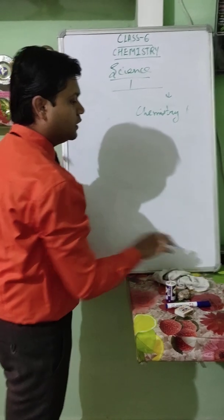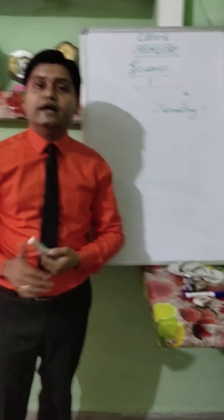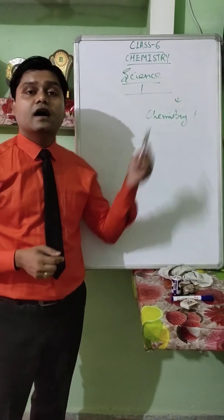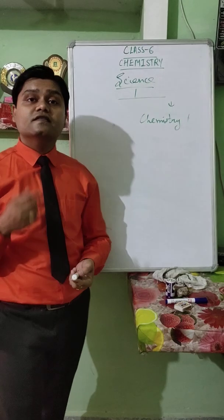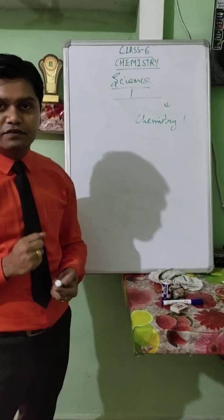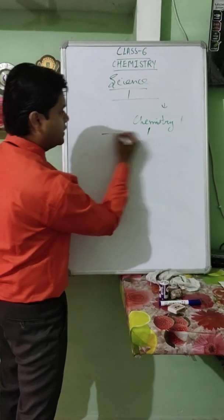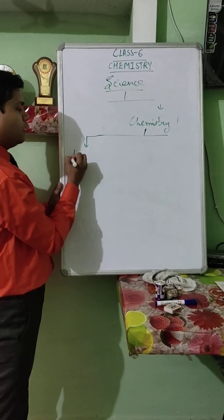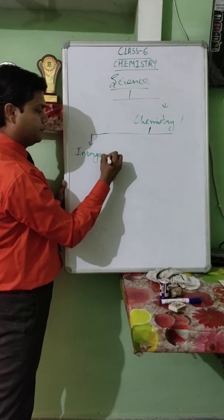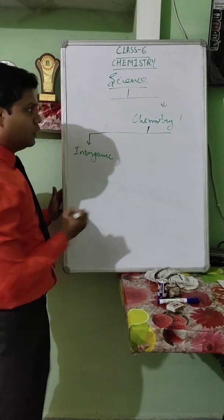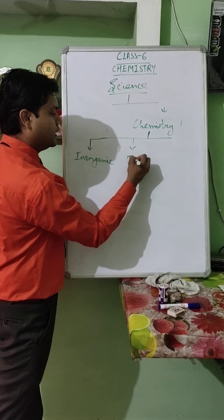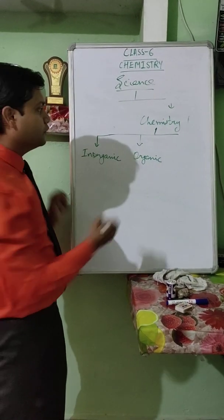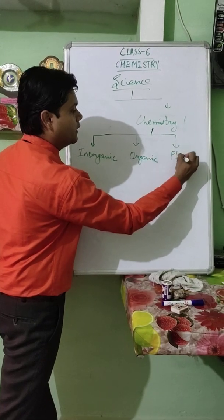The question arises: are there more branches of Chemistry? Yes, Chemistry is subdivided into three more branches. The first branch is Inorganic Chemistry, the second is Organic Chemistry, and the third is Physical Chemistry.